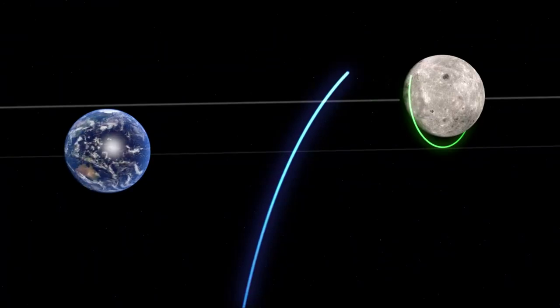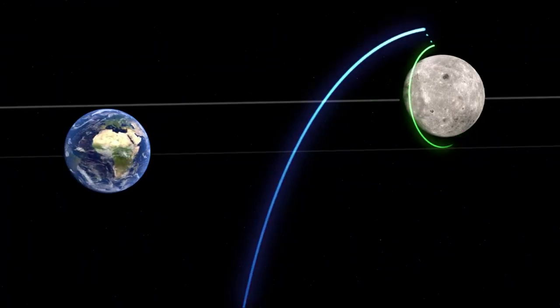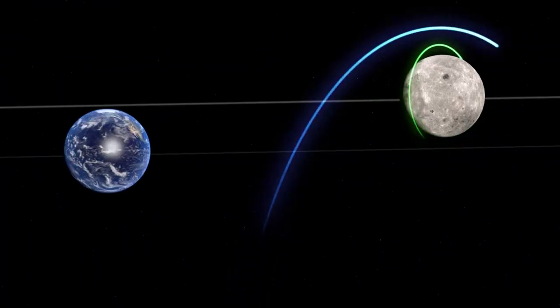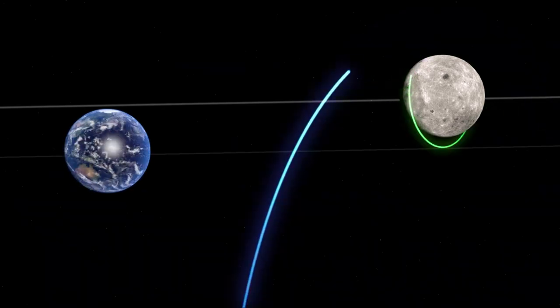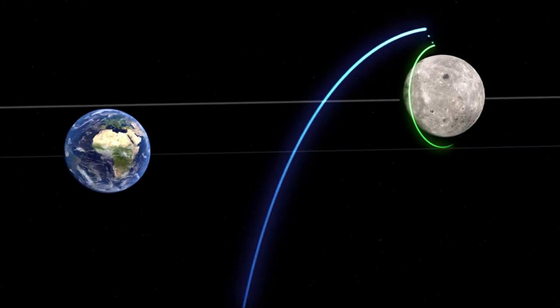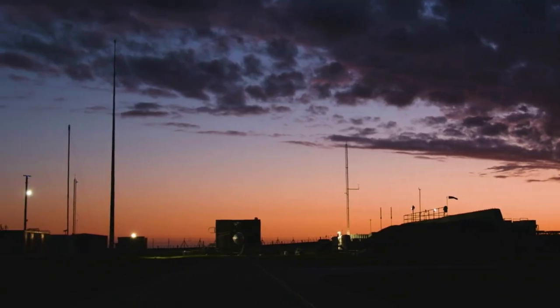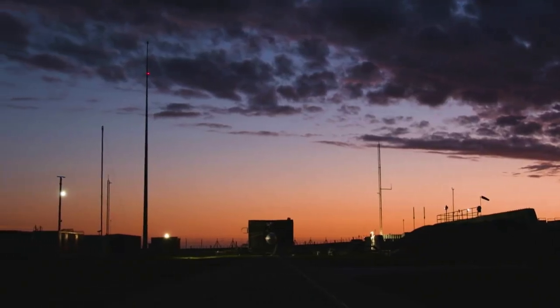The intention is for Capstone to communicate directly with LRO and utilize the data obtained from this crosslink to measure how far it is from LRO and how fast the distance between the two changes, which in turn determines Capstone's position in space. This peer-to-peer information will be used to evaluate Capstone's autonomous navigation software.